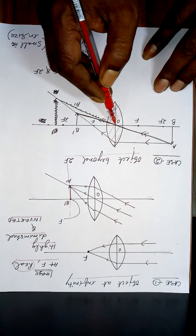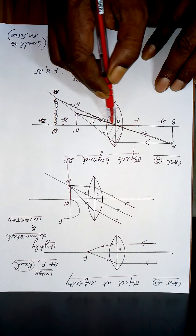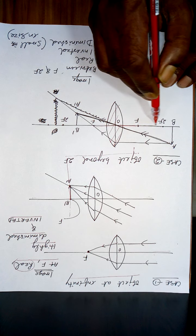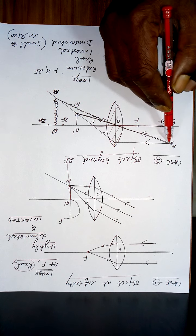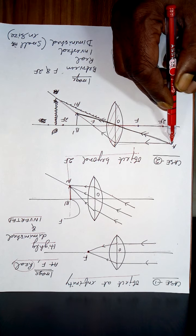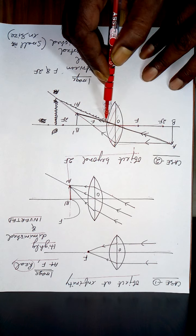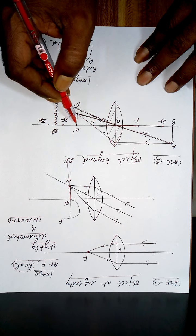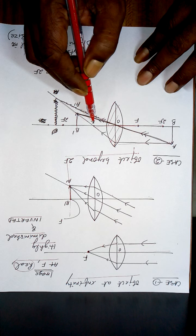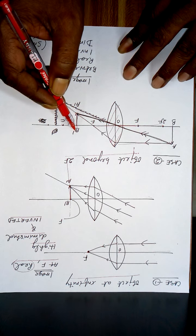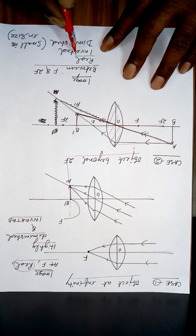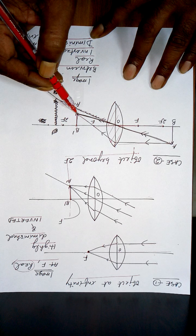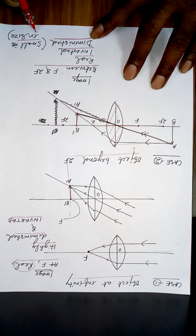Case 2: object beyond 2f. The foci are equidistant from O, so 2f is marked at twice that distance. A ray parallel to the principal axis passes through the focus; a ray through the optical center goes undeviated. The image A'B' is formed between f and 2f. It is real, inverted, and diminished.